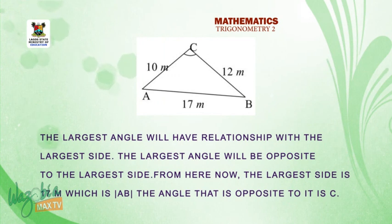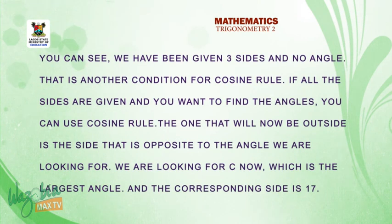So the largest angle. What we can know about the largest angle is that the largest angle will also have relationship with the largest side. So the largest angle will be opposite to the largest side. From here now, you can see that the largest side is 17 m. So 17 m is AB. And the angle that is opposite to it is angle C. So you can see now, we have been given three sides. No angle at all. We want to find the angle. That is another condition for cosine rule. So majorly, those are the two conditions for cosine. Three sides, if all the sides are given, and you want to find an angle, you can use your cosine.